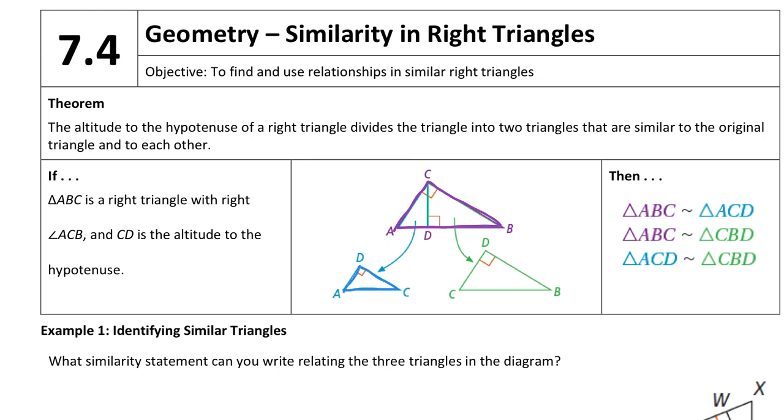The biggest triangle is similar to ACD, the smaller of the two smaller triangles, and then CBD. In that order specifically. So the first thing that's hard to do is to determine each triangle has a hypotenuse, and it seems like you're naming the same segments over and over, so that's what gets confusing.